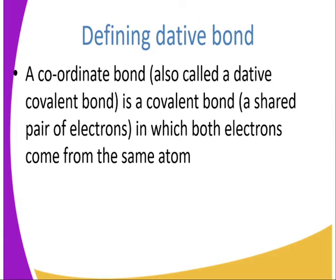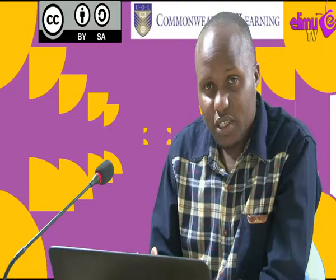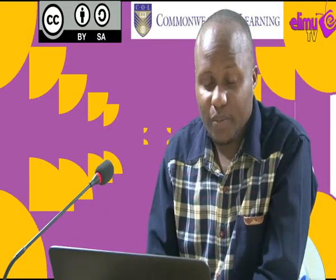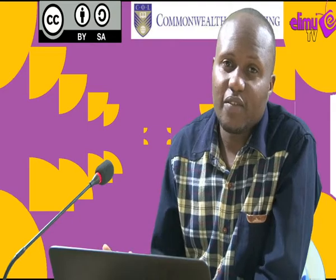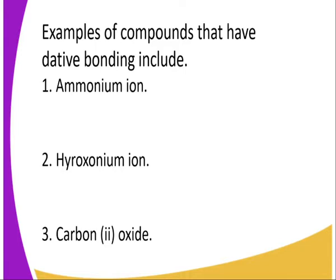What is a dative bond? A dative bond or a coordinate bond is a bond which is formed as a result of sharing a pair of electrons. The shared pair of electrons are from one atom — that is, they are donated by one atom. Examples of compounds that have dative bond include ammonium ion, hydronium ion, and also carbon monoxide, which also has what we refer to as a coordinate or dative type of bond.